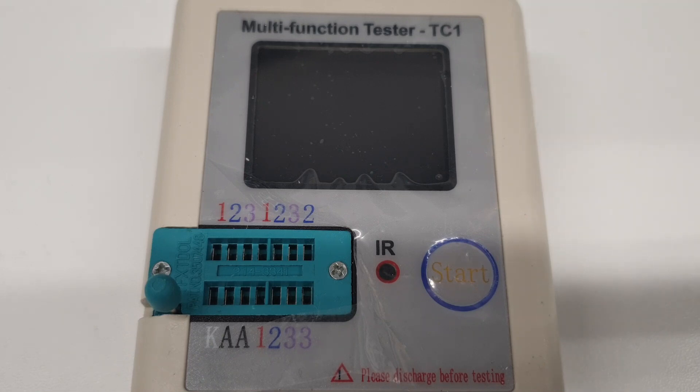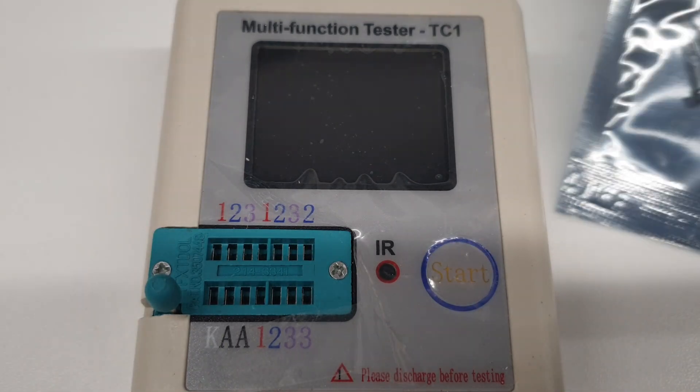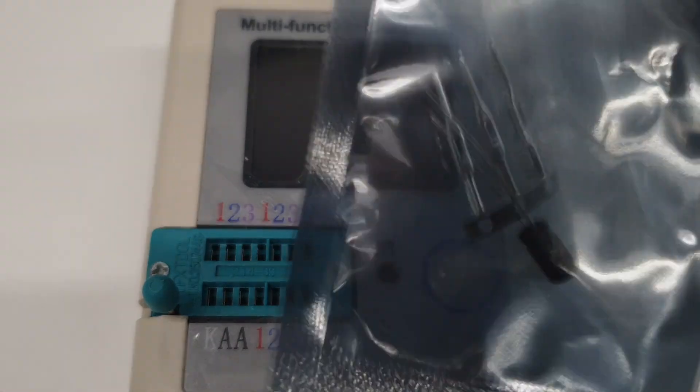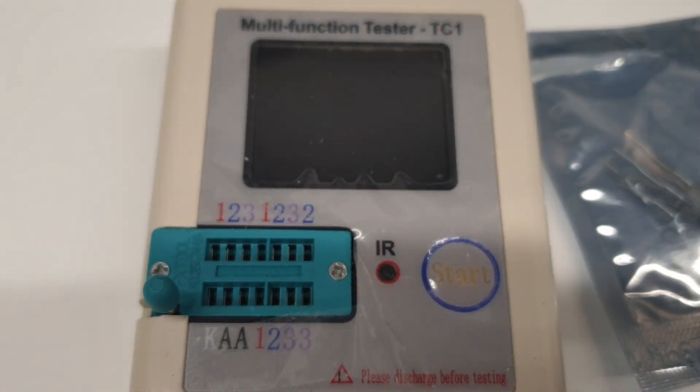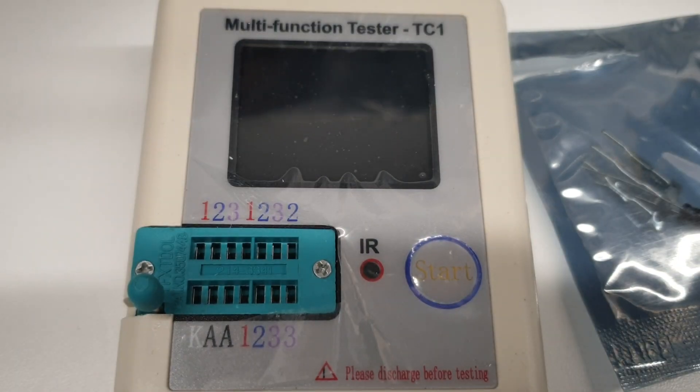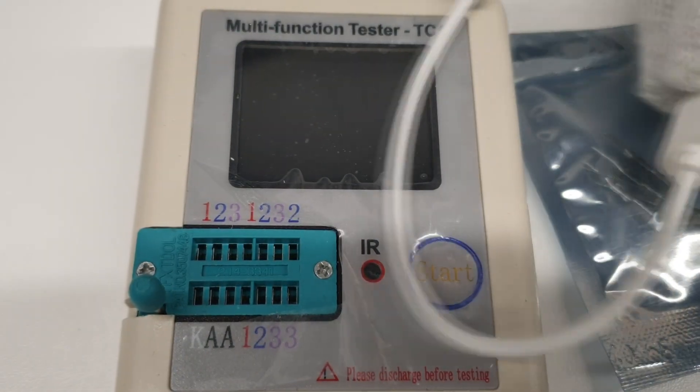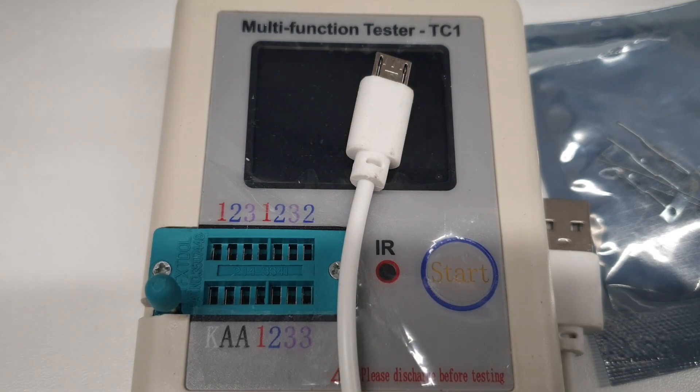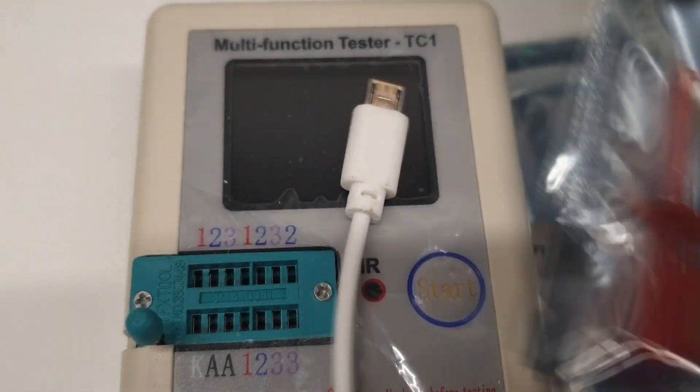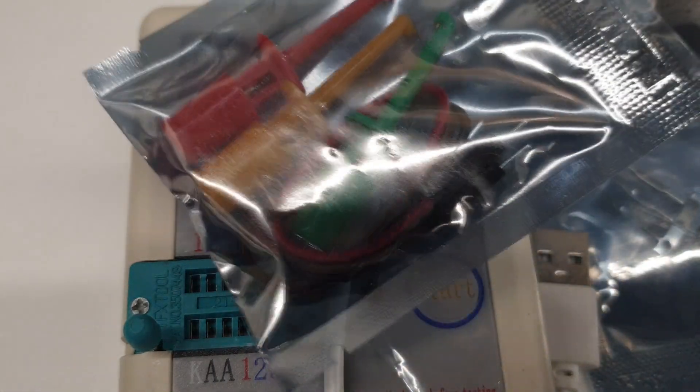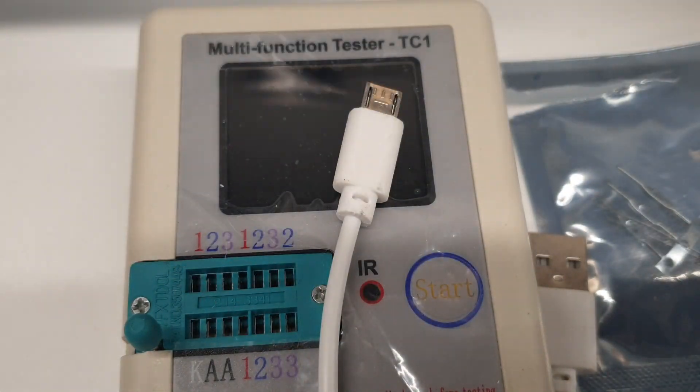Other things I got in the package: this calibration tool with a capacitor, a USB cable for charging, and I think this is just connector ports if you want to check devices that are plugged into some board and you don't want to take them out.